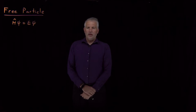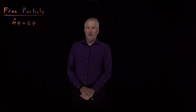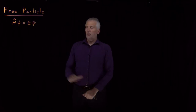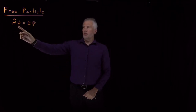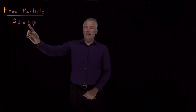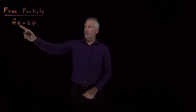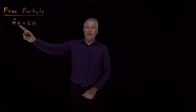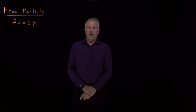Let's try to solve Schrödinger's equation for an actual problem we could run across in the real world. We know Schrödinger's equation, written in operator form here — the Hamiltonian acting on psi is equal to E times psi. That's an eigenvalue problem. We're looking for wave functions that are the eigenfunctions of this operator, the Hamiltonian.